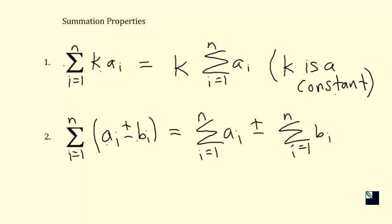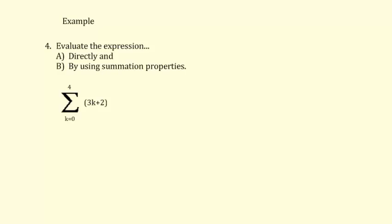So one example with two parts. Let's apply those properties to this sum and see if it's the same thing we get as if we just calculate the expression directly. So I guess we'll start with the direct method. If I plug 0 in for k, my first term would be 2. Then I'm going to plug in 1 and get 3 times 1 plus 2 is 5. Plug in 2: 3 times 2 is 6 plus 2 is 8. Plug in 3: 3 times 3 is 9 plus 2 is 11. Plug in 4: 3 times 4 is 12, plus 2 more is 14. If you add up these five numbers, you get 40.